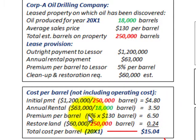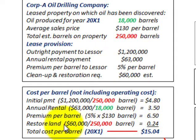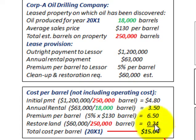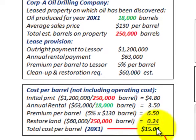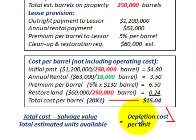The premium per barrel is 5% times the selling price of $130 per barrel, which equals $6.50. Then to restore the land, that's $60,000 at the end of the lease divided by the total estimated barrels of 250,000, giving us $0.24 per barrel. So our total cost per barrel for 20X1 is $15.04, and that is our depletion cost on a per unit basis.